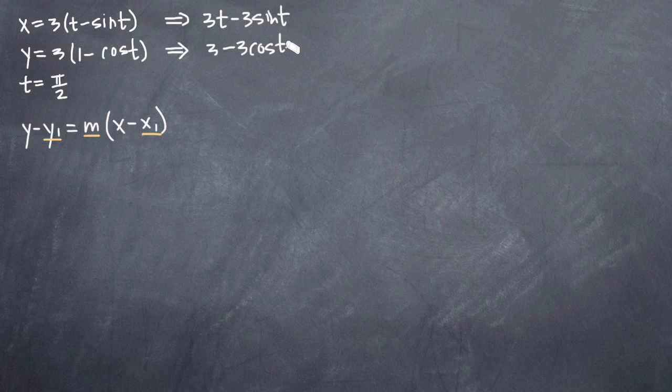We can simplify them by distributing the 3 across the value here. So we'll get 3t minus 3 sine t for x, and for y we'll get 3 minus 3 cosine of t. That'll make it a little easier to plug in t equals pi over 2.